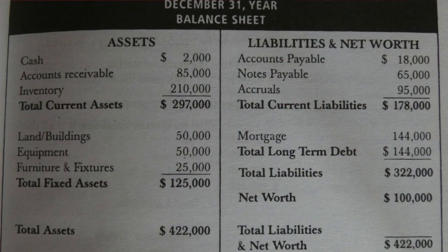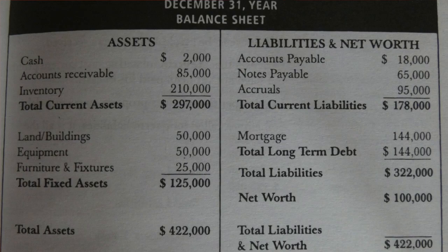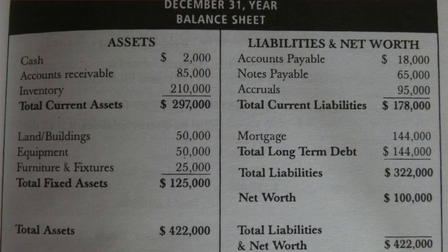Now that we have a general idea about the terminologies, let's read an actual balance sheet. This is for a sole proprietorship. Under assets: cash is $2,000, accounts receivables are $85,000, inventory is $210,000, and total current assets is $297,000 — the amount they can receive within a year.